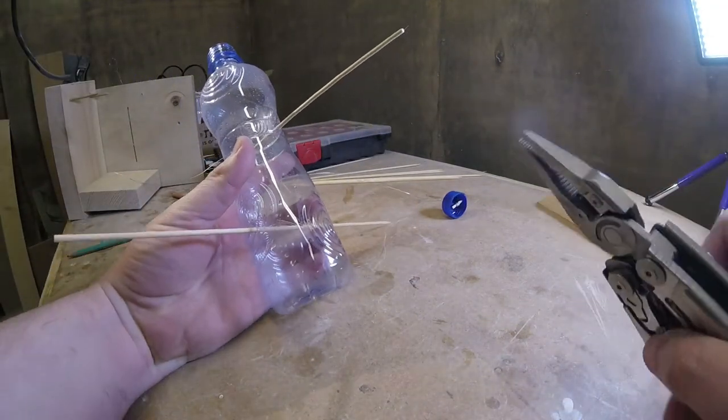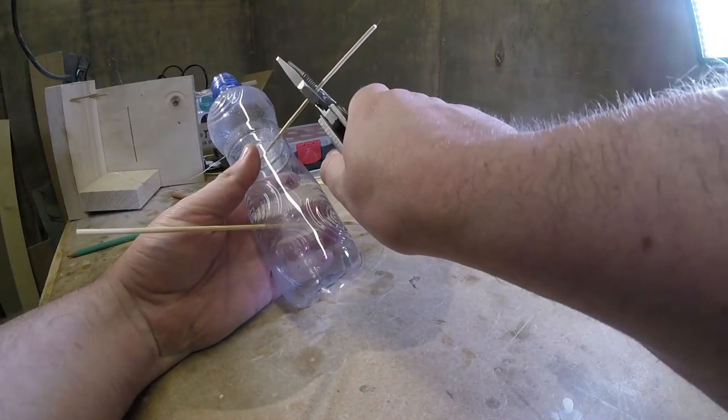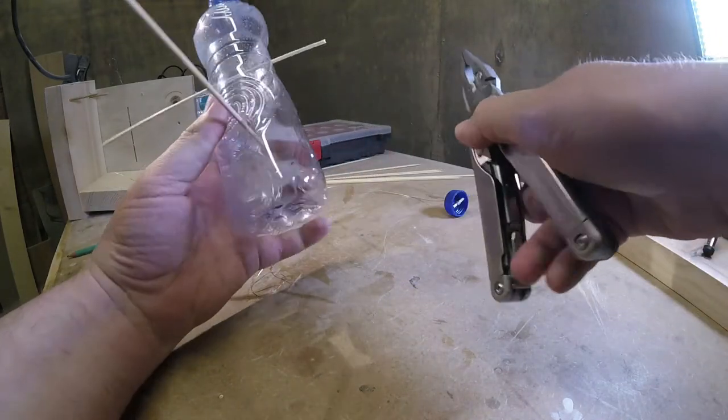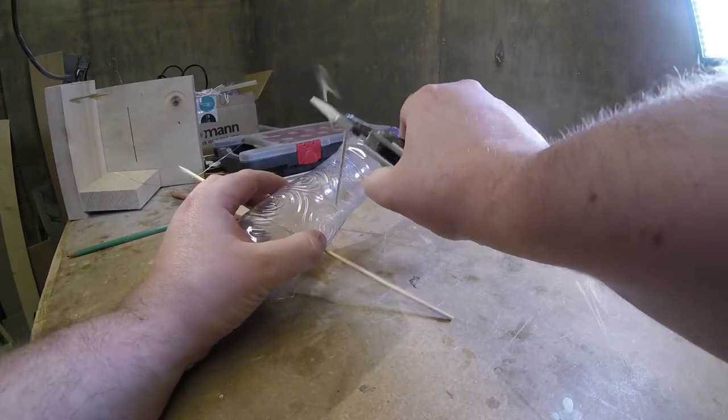I used the wire cutters on the Leatherman Surge to trim the perch's length. Be careful your mark one eyeballs don't get skewered by pieces of flying bamboo, because these bits went everywhere.